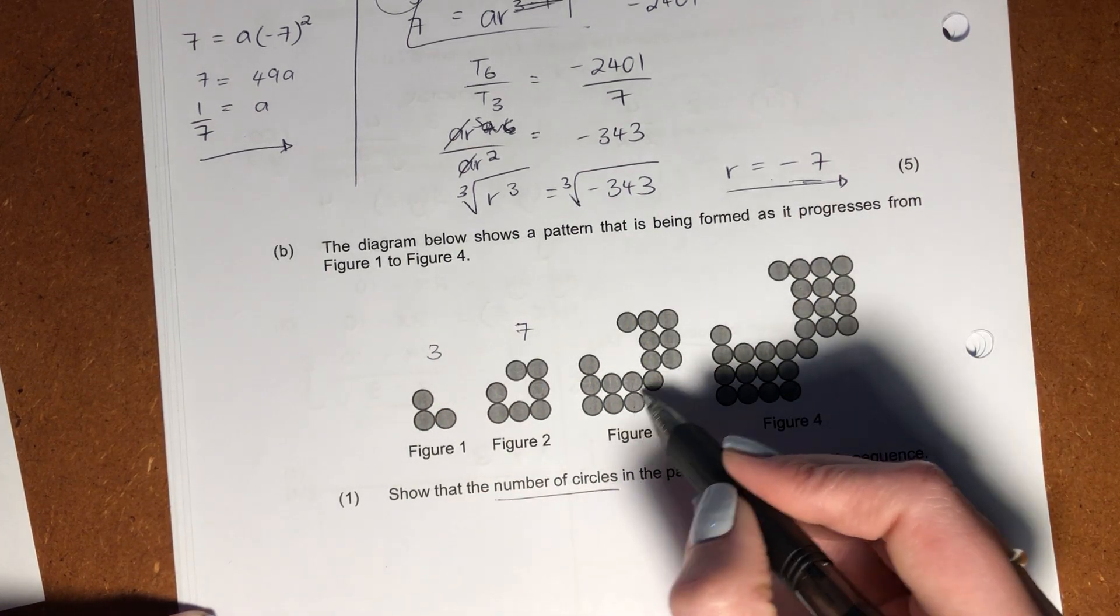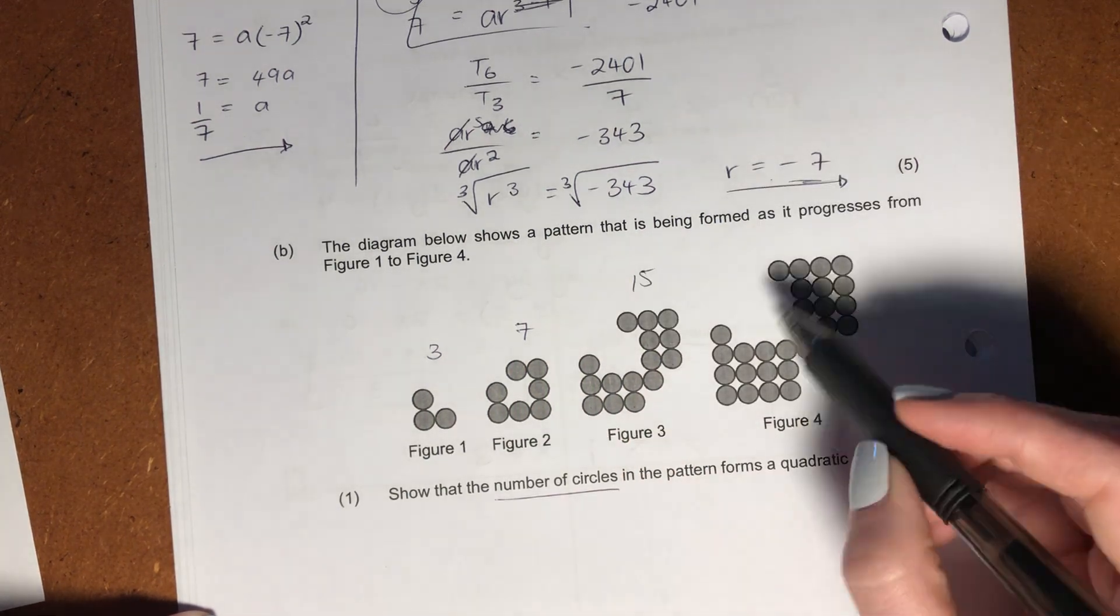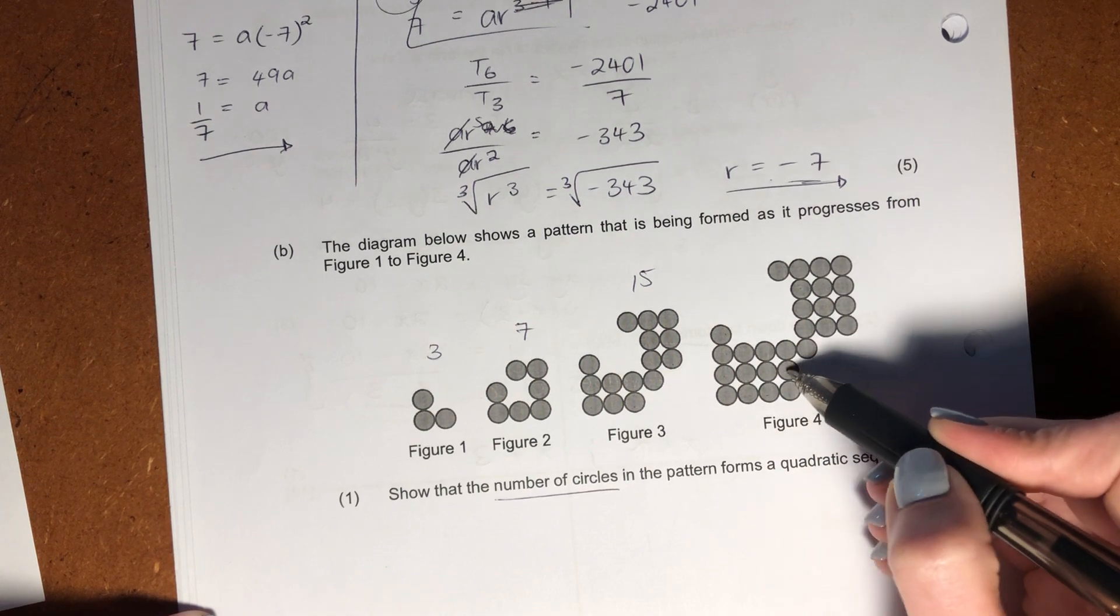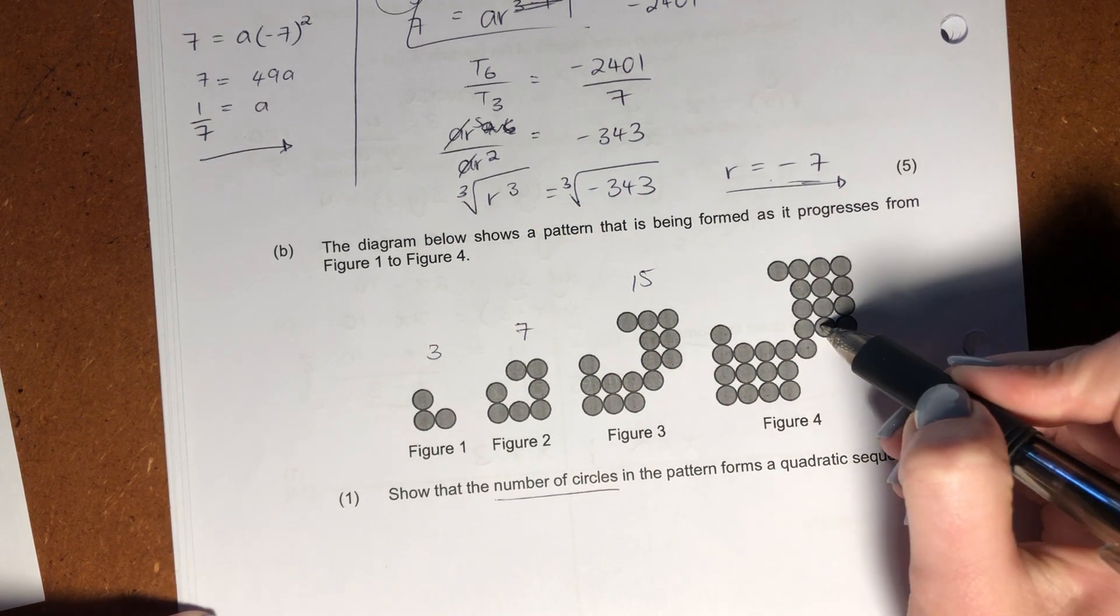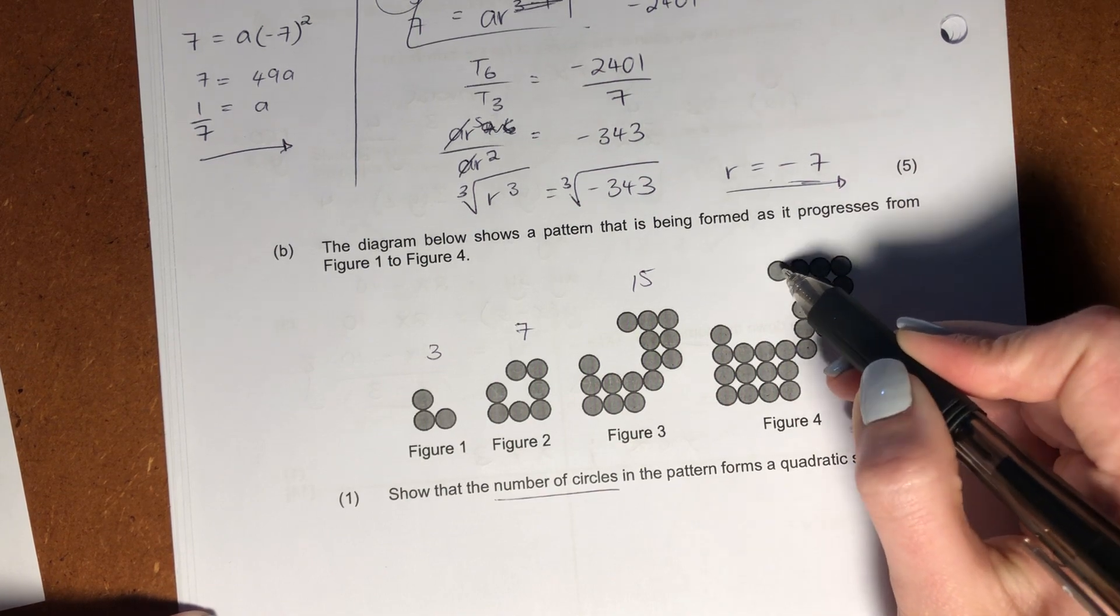So I think what's important here is don't try and look at how the sequence is formed. What has it asked us to look for? The number of circles. So here we go from 3 circles to 7 circles, to 1, 2, 3, 4, 5, 6, 7, 8, 9, 10, 11, 12, 13, 14, 15... to 16, 17, 18, 19, 20, 21, 22, 23, 24, 25, 26, 27.